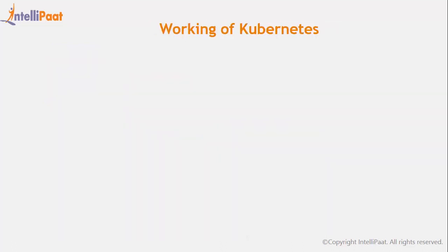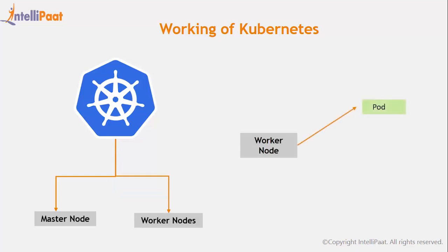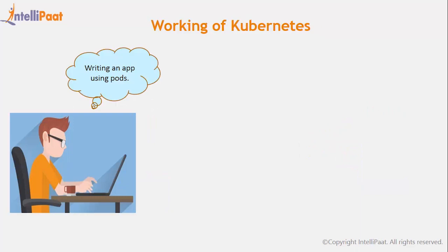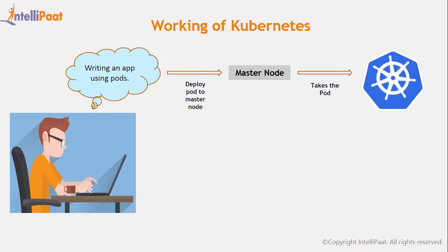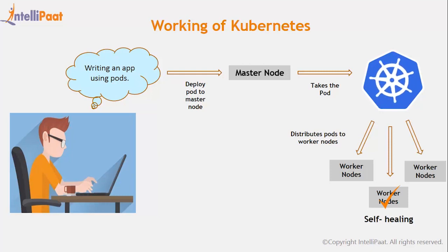Let us now move on to the working mechanism of Kubernetes. It has got one master node and several worker nodes, and a worker node contains many pods inside it. Whenever you write an application or software using pods, you deploy your pods to the master node and tell it how many pods you need. Kubernetes takes the instructions from the master node, comes into action, and distributes the pods on the relevant worker nodes. It not only does the work of deploying containers but also exercises a self-healing process — whenever a worker node fails or does not respond to user commands, Kubernetes reschedules the containers to other nodes. And if containers are not working, it kills the container and replaces it with others.